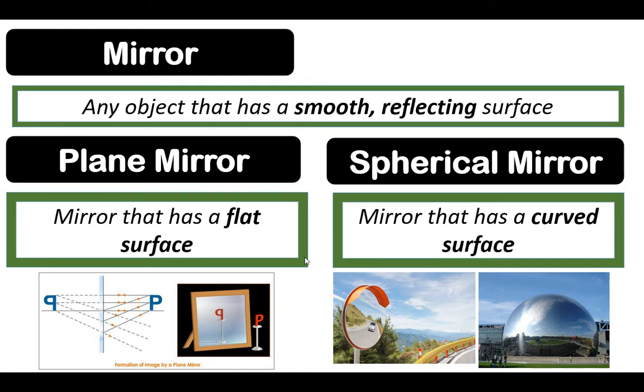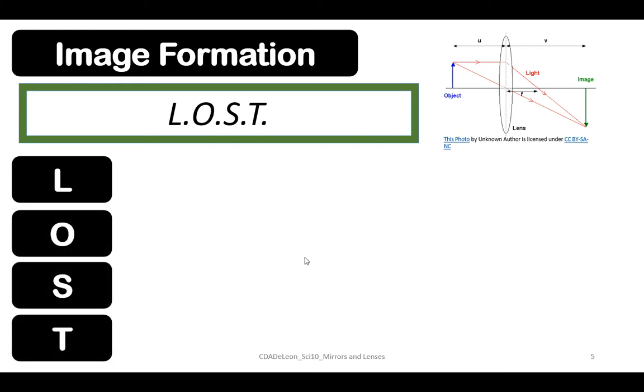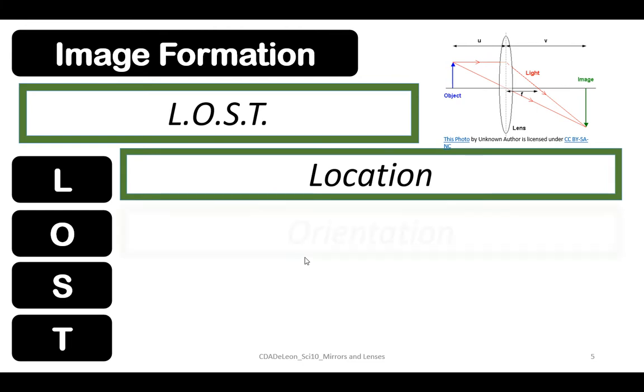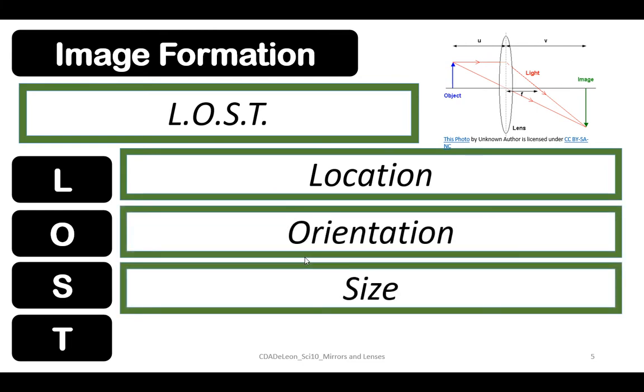Let's discuss image formation. We use the acronym LOST in determining the characteristics of an image which is being formed by means of reflection. It has location, orientation, size, and type.